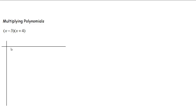Today we're going to multiply polynomials. 'Poly' means many, so a polynomial has many terms. This right here is a polynomial, and so is this. More specifically, these are binomials — each has two terms. Today we're going to multiply a binomial times a binomial.